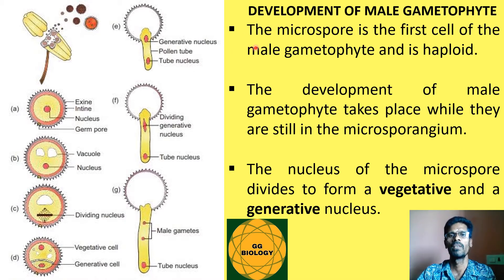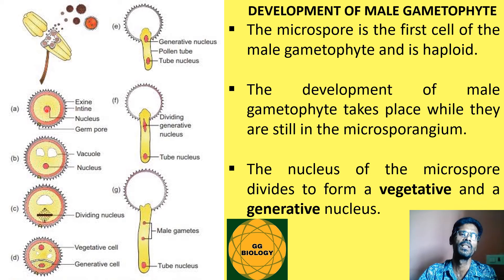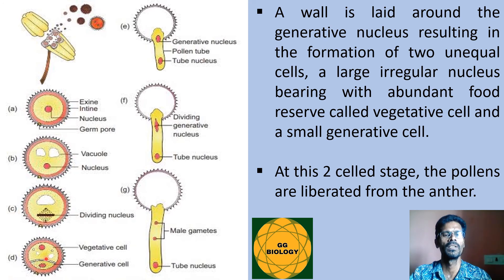The microspore is the first cell of the male gametophyte and is haploid in nature. The development of the male gametophyte begins while the microspore is still in the microsporangium. The nucleus of the microspore divides to form a vegetative nucleus and a generative nucleus. Initially the pollen grain contains a single nucleus with cytoplasm, intine, and exine, which then divides into two nuclei — vegetative and generative.